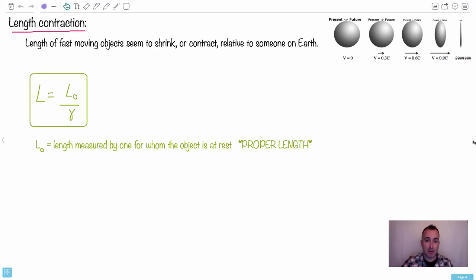Something else really interesting from special relativity, other than time dilation, is length contraction. That's what we're learning about now. The length of fast-moving objects seem to shrink or contract relative to someone on Earth.